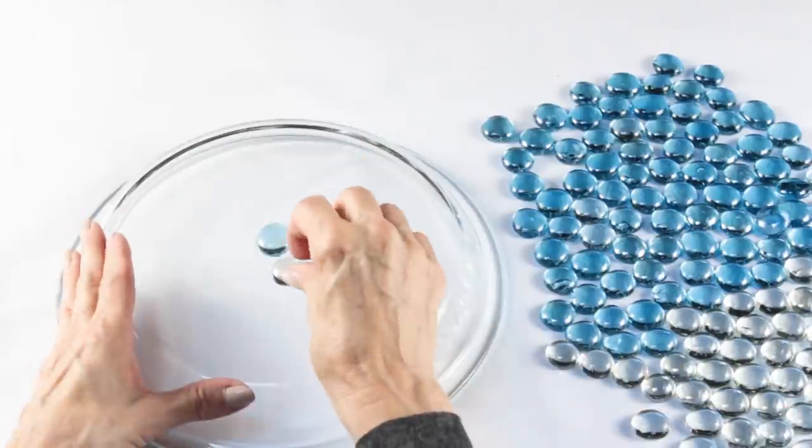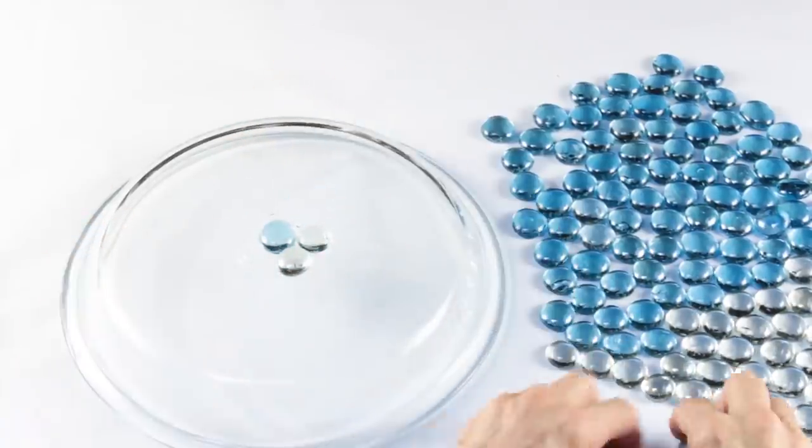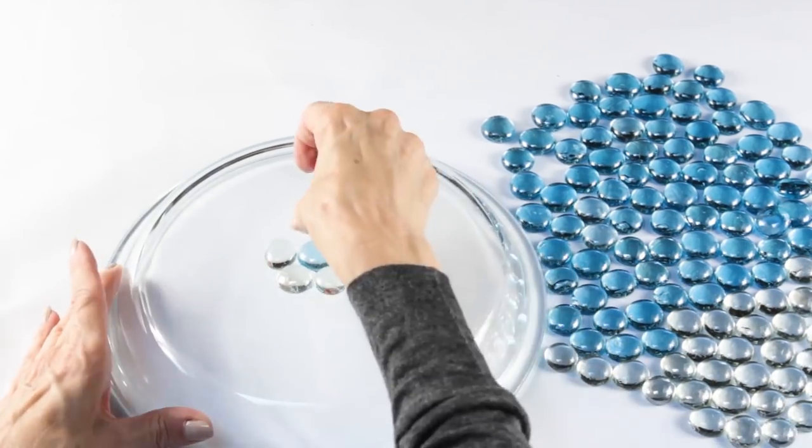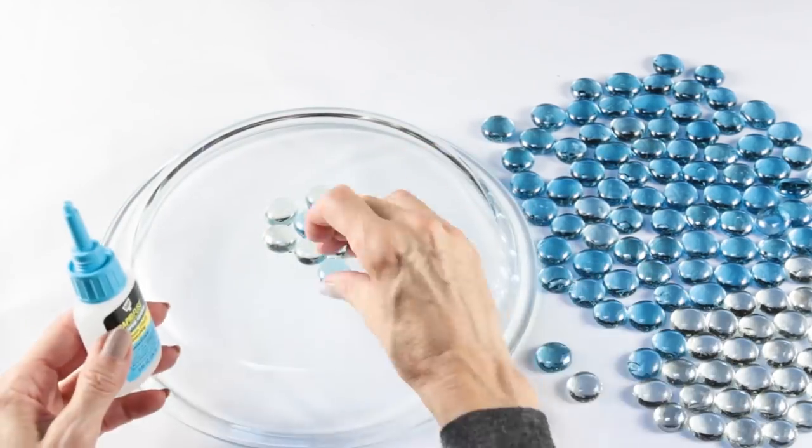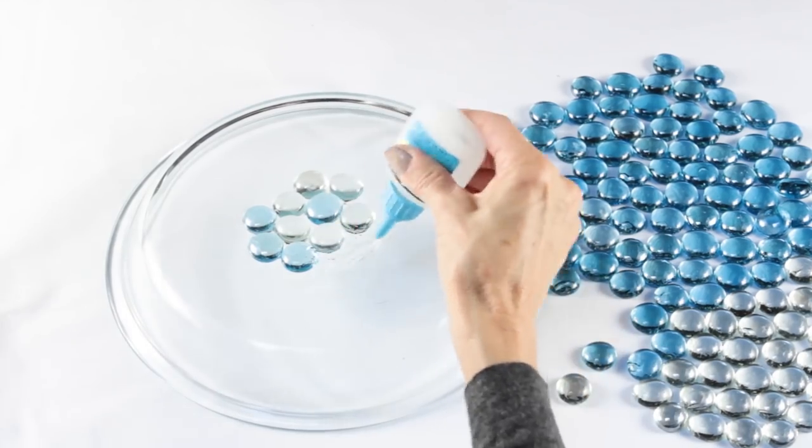I decided to make a little flower in the center so I put some of the glue on the pie plate and then started arranging my beads making sure that the flat side was down. They began to adhere to the glass in seconds. I was really surprised that this worked so well.